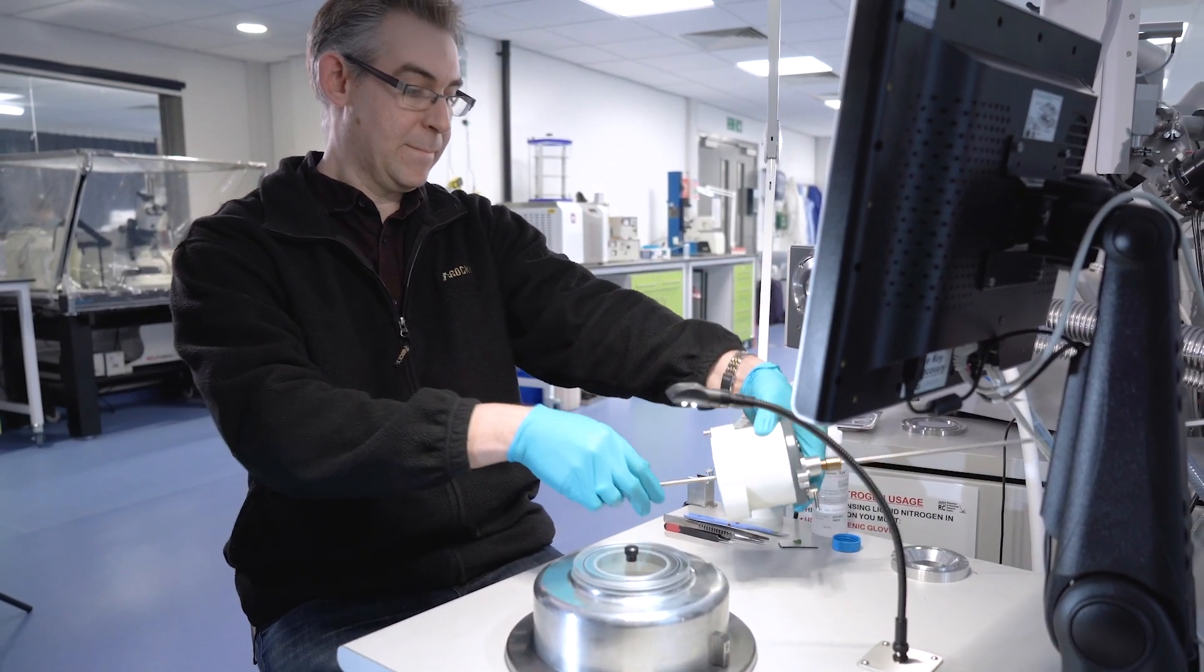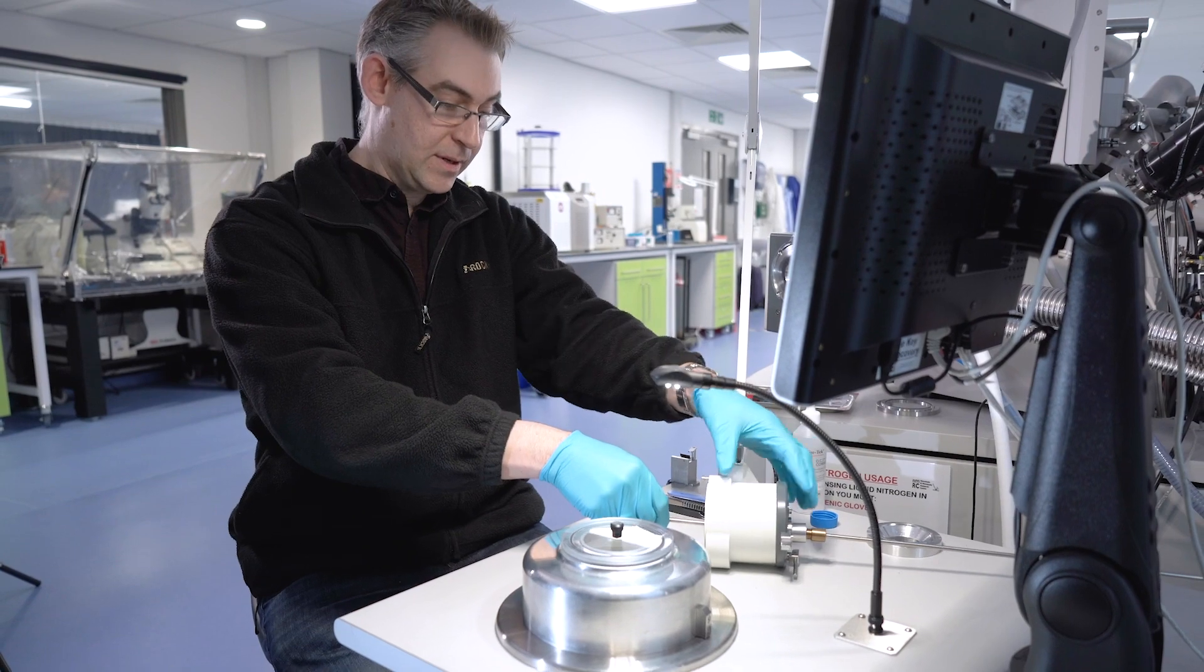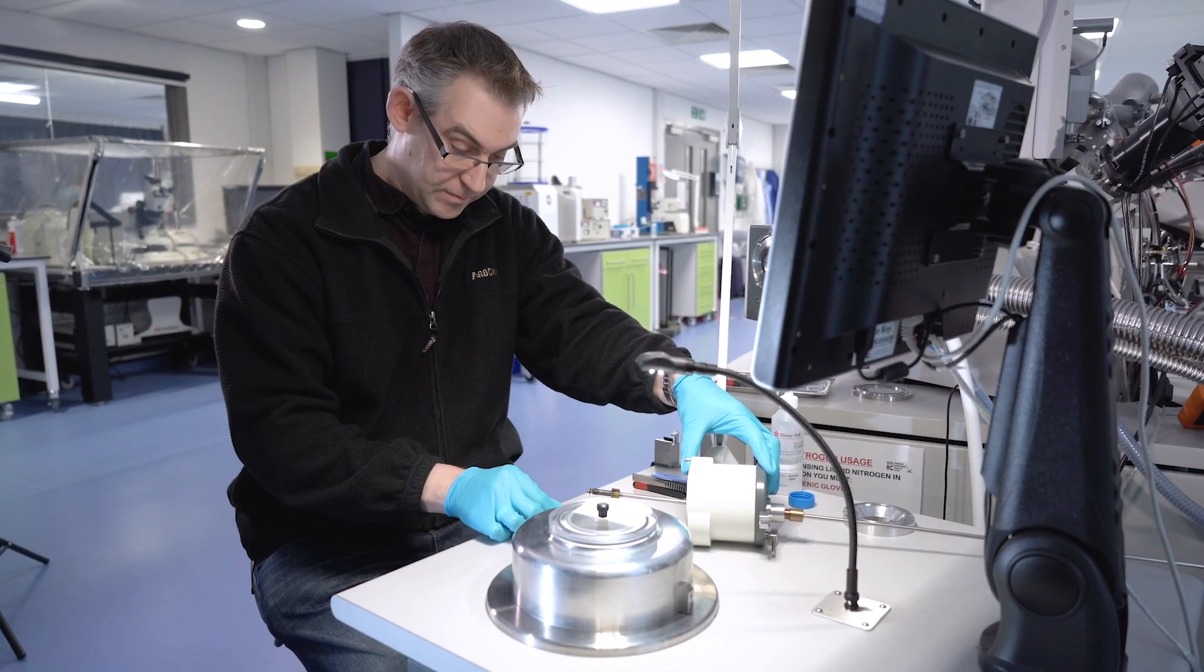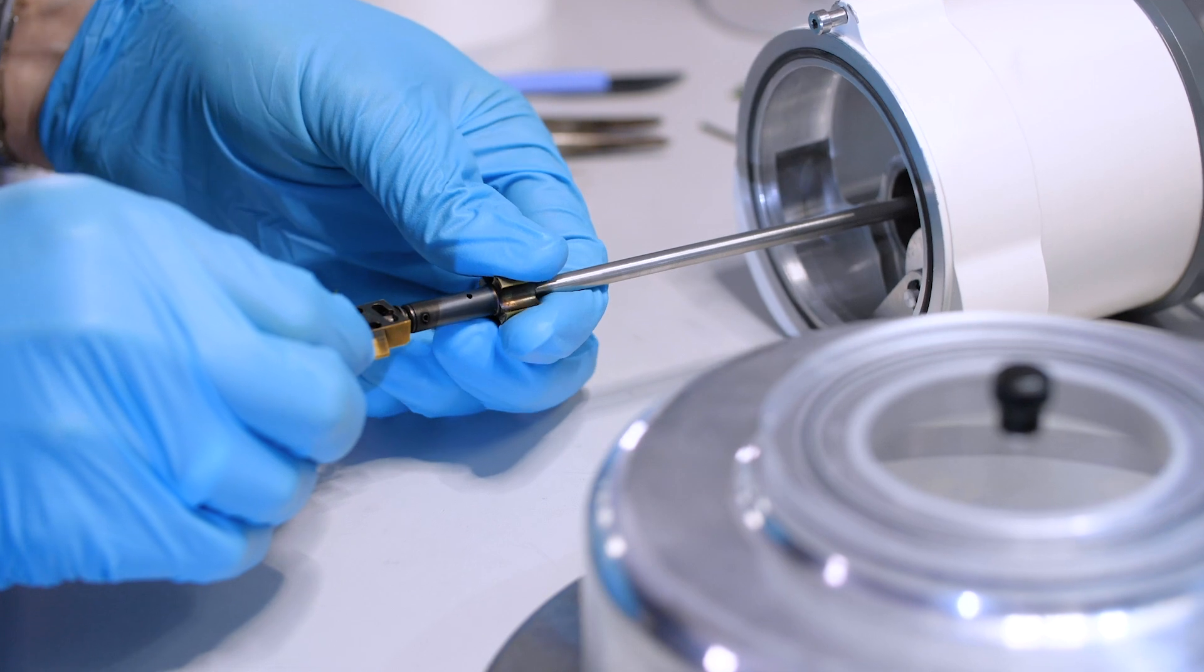So having loaded the sample onto the shuttle, Chris is now going to fit the shuttle onto the transfer rod. This is a simple 90 degree bayonet.